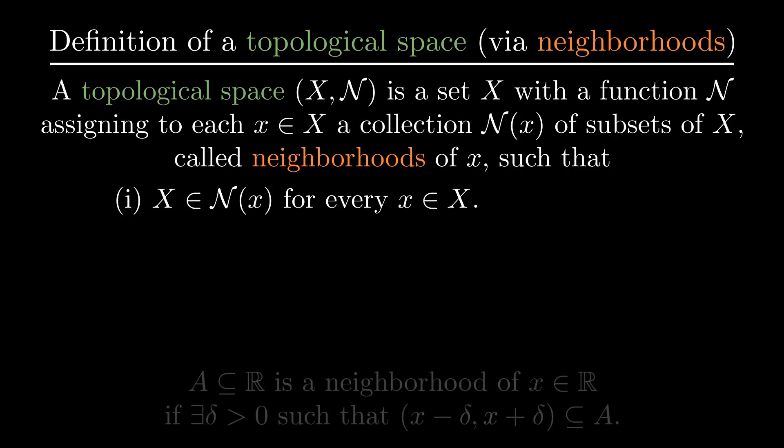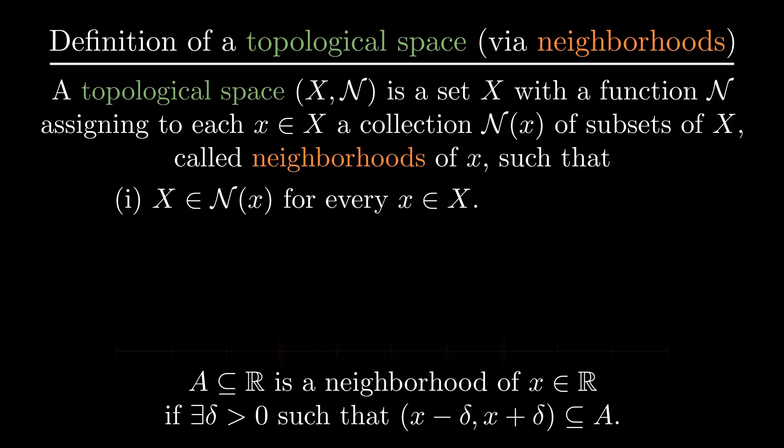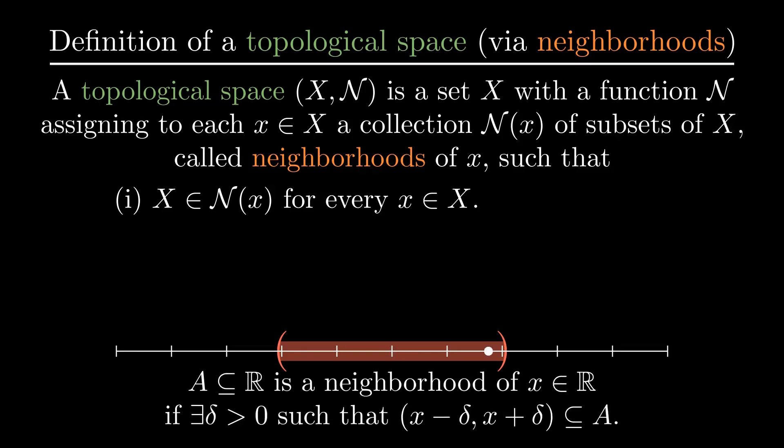In the real numbers, a neighborhood of x was defined as any set containing an open interval around x. A key property of open intervals is that no matter where we pick a point inside them, there is always a smaller interval around that point that's still contained in the set.